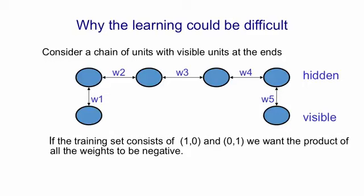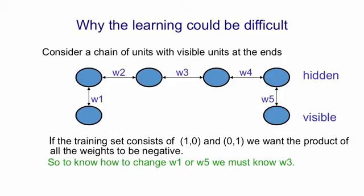So, for example, if all the weights are positive, turning on W1 will tend to turn on the first hidden unit, and that will tend to turn on the second hidden unit, and so on, and the fourth hidden unit will tend to turn on the other visible unit. If one of those weights is negative, then we'll get an anticorrelation between the two visible units.